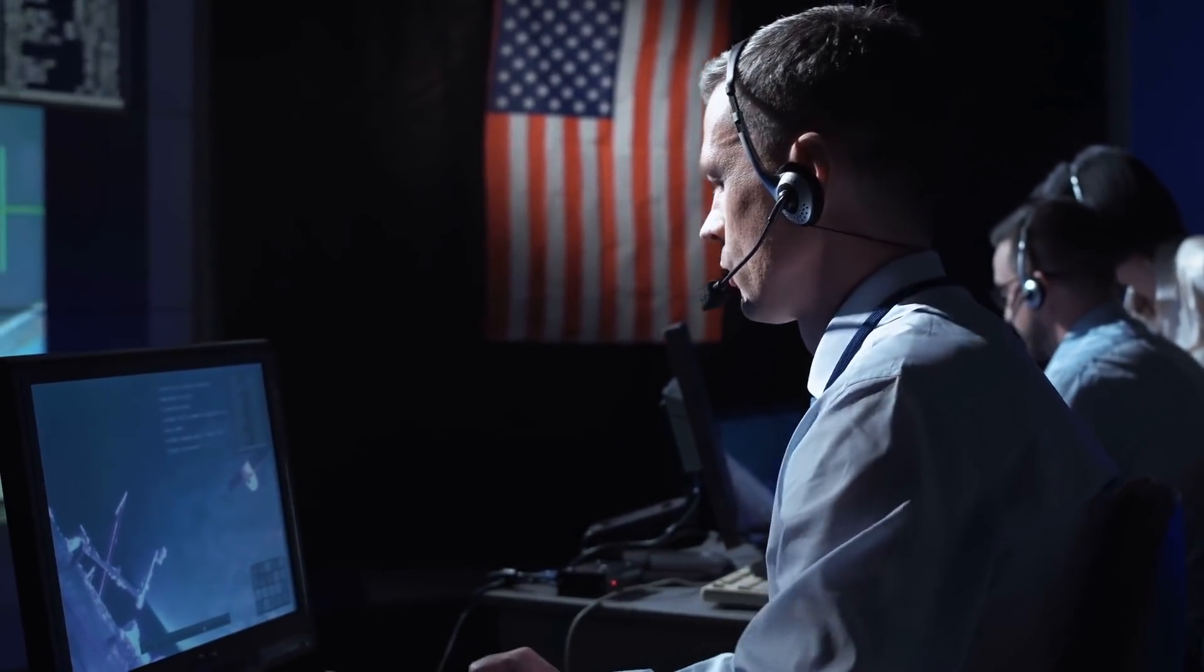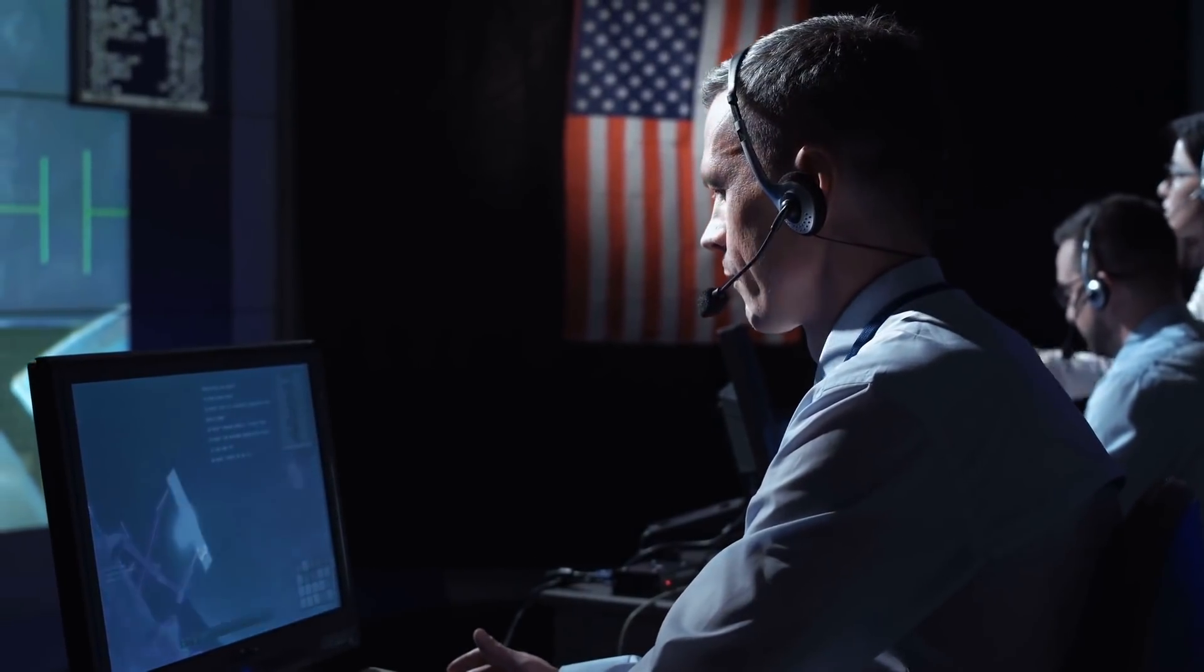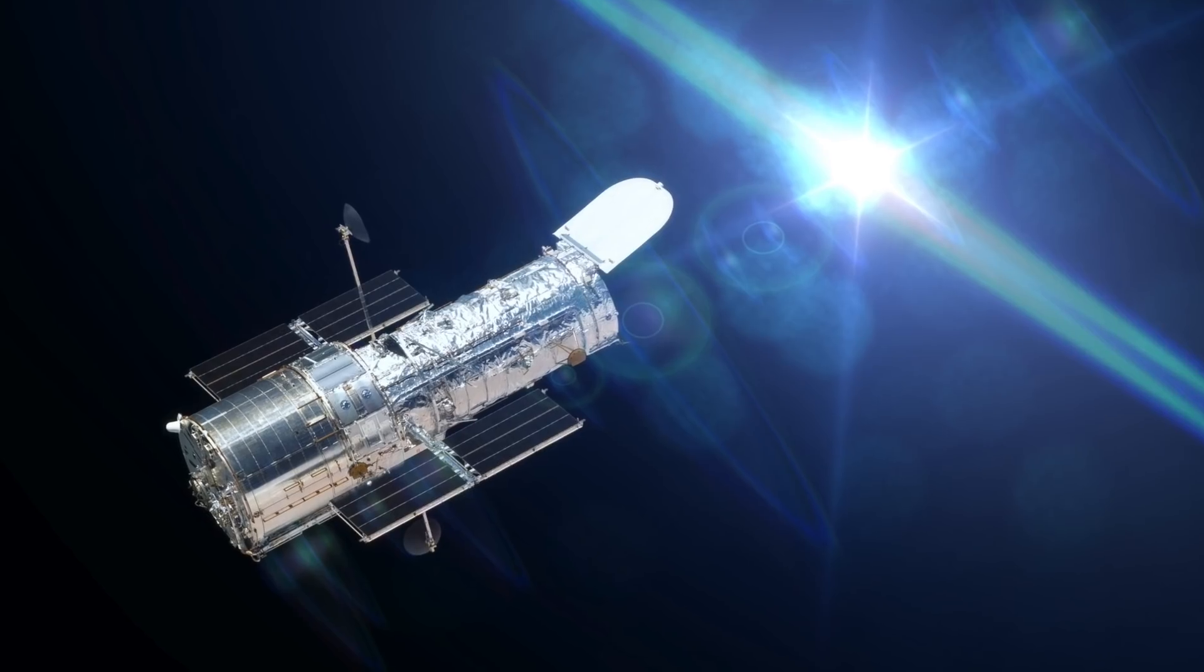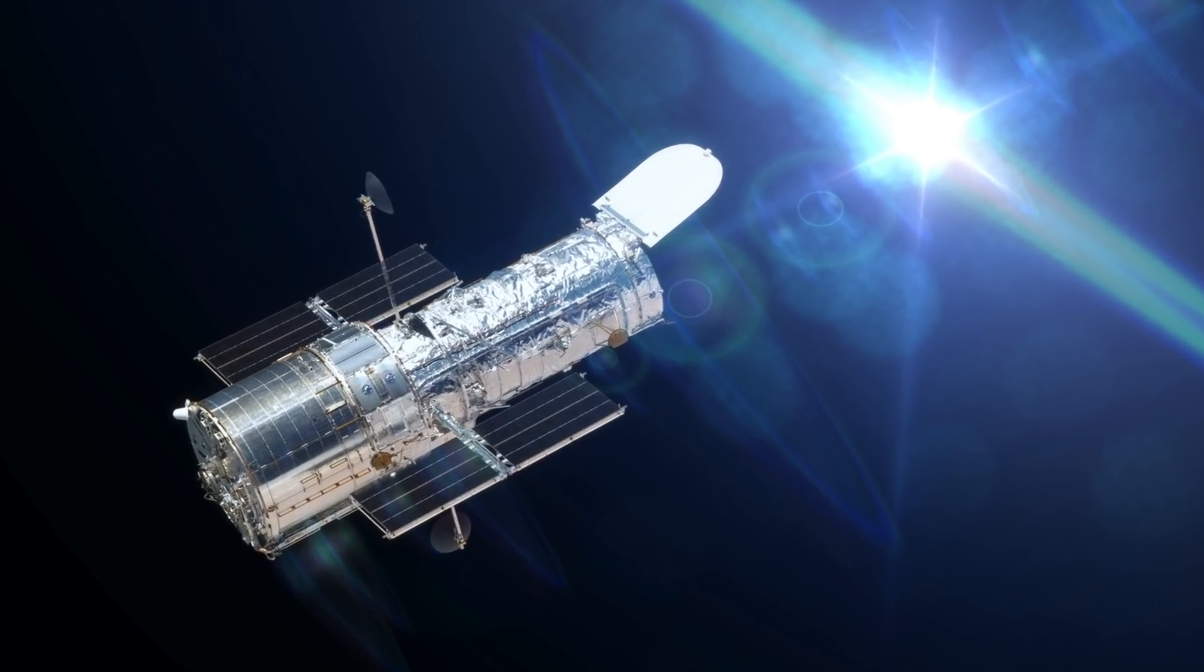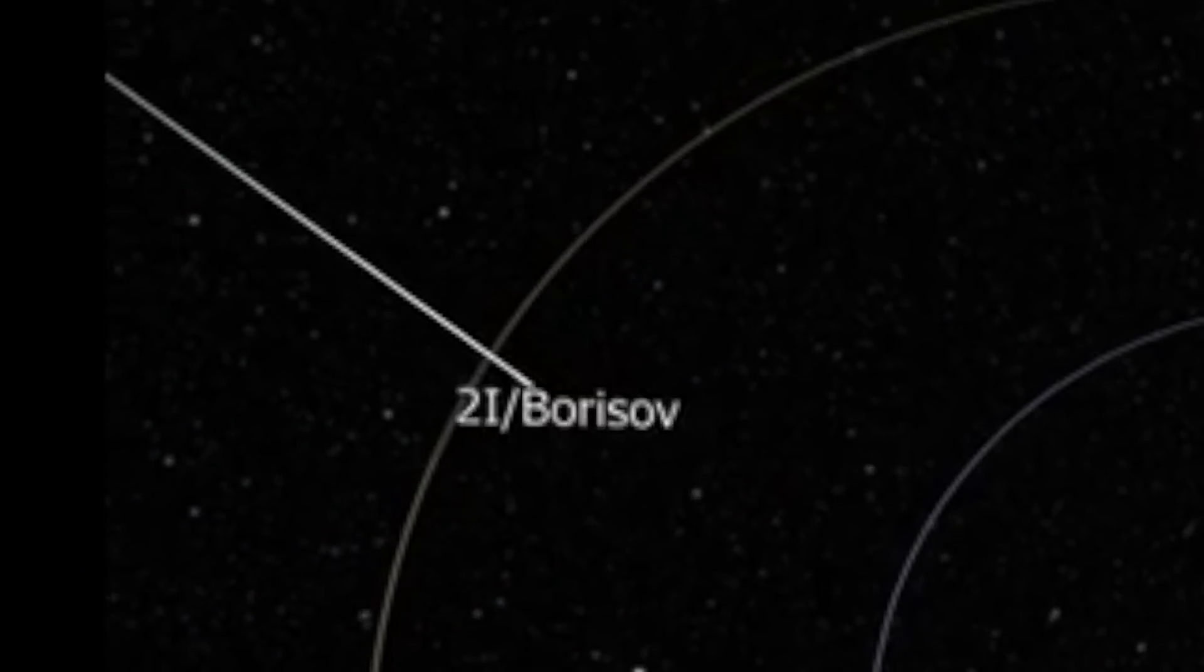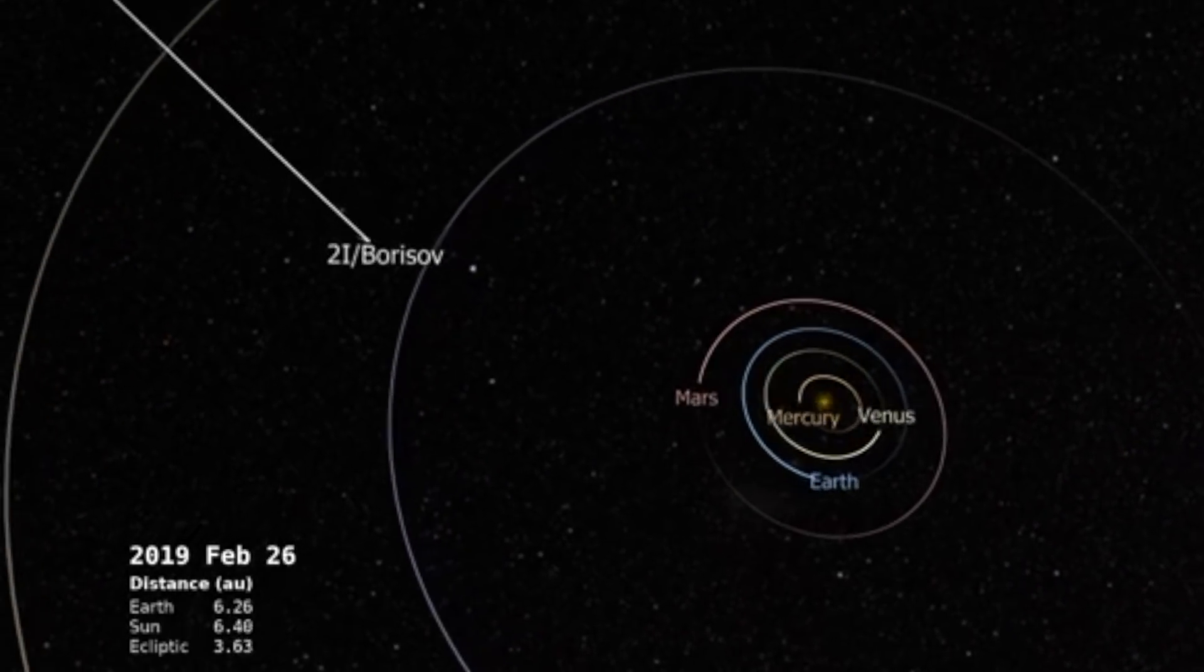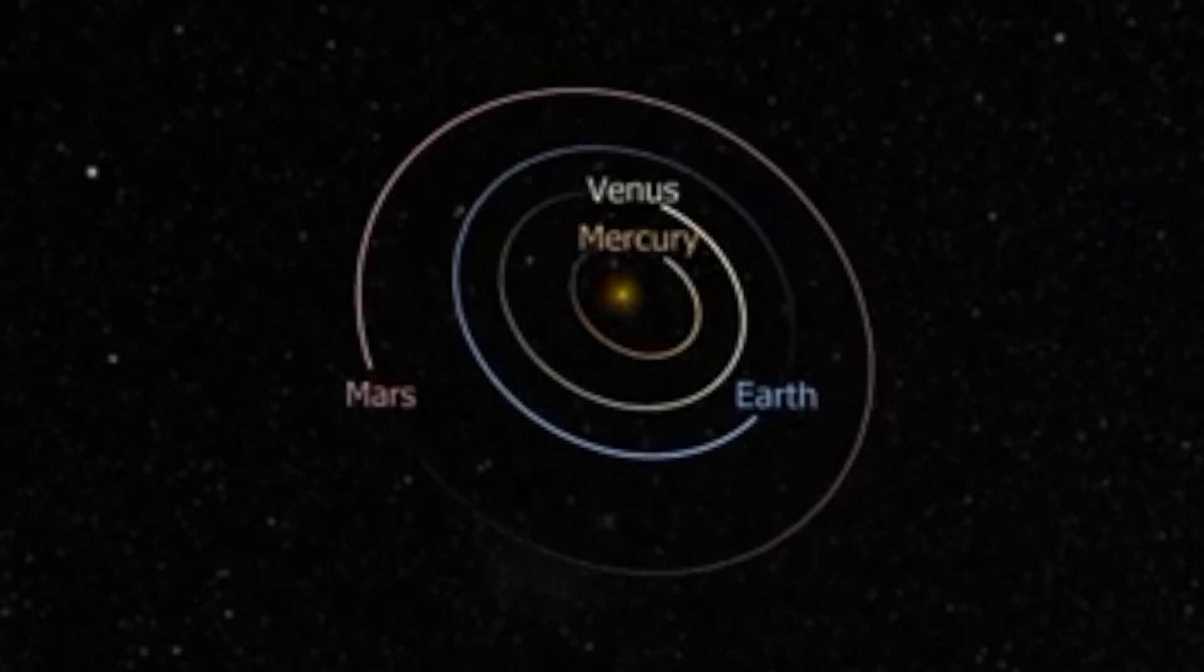After the NASA researchers realized what a sensational find they had come across, they observed the comet with the help of the famous Hubble Telescope. When the experts started their investigations, 2I Borisov was located about 326 million kilometers away from our blue home planet.